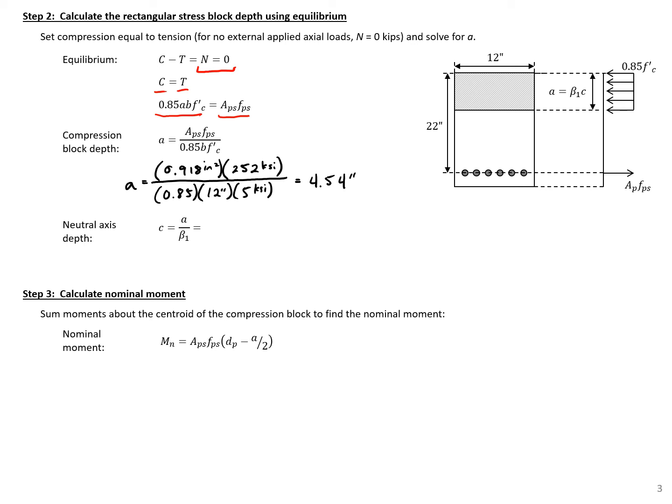The neutral axis depth is found by dividing 4.54 inches by beta 1 of 0.8, giving us C equal to 5.7 inches.